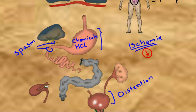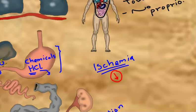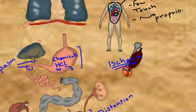Chemicals such as leaking hydrochloric acid in perforating peptic ulcer disease produce one of the most severe pain ever known to mankind.